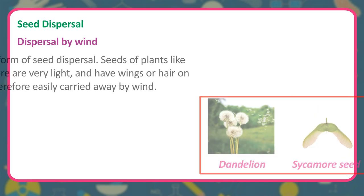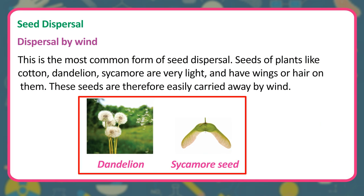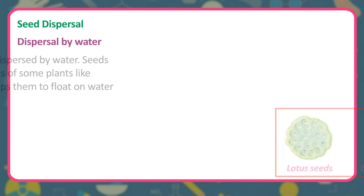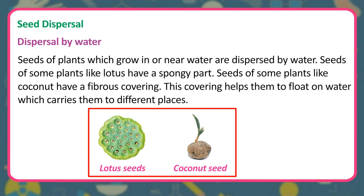Dispersal by wind is the most common form of seed dispersal. Seeds of plants like cotton, dandelion, and sycamore are very light and have wings or hair on them, so they are easily carried away by wind. Dispersal by water: Seeds of plants which grow in or near water are dispersed by water. Seeds of some plants like lotus have a spongy part, and seeds of plants like coconut have a fibrous covering that helps them float on water, carrying them to different places.